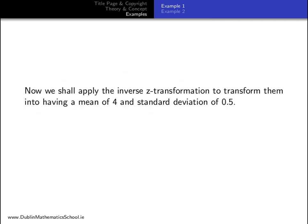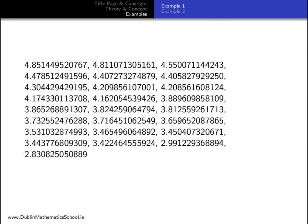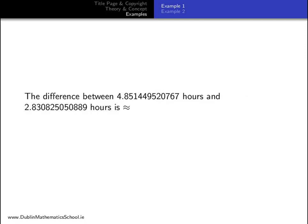Now we should apply the inverse Z transformation we found earlier to transform them into having a mean of 4 and standard deviation of 0.5. We should also put them in descending order. Shown are the numbers transformed. The largest number first and the smallest number last.